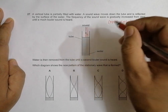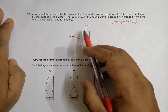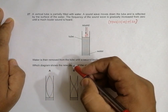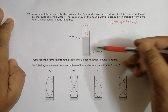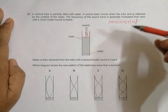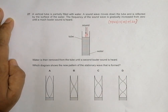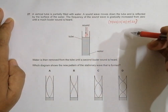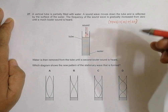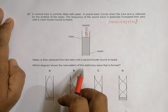The frequency of the sound is gradually increased from zero until a much louder sound is heard. Water is then removed from the tube until a second louder sound is heard — so first sound then second sound. Since it's a closed pipe, the first loud sound is the first harmonic and the second is the third harmonic. The question asks which diagram shows the new pattern of the stationary wave formed.